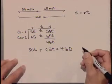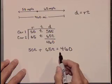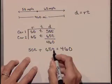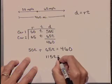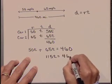That's the hard part. Now let's solve the equation. Combining like terms, 50T plus 65T is 115T. That's equal to 460.